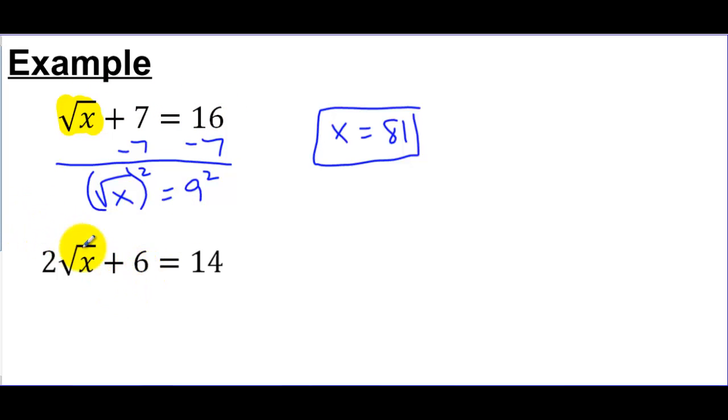So the second problem, we have the same idea. So if I were to highlight my function, I'd say the square root of x. There it is again. And in this case, I just have an extra. This is 2 times the square root of x plus 6. So I'm going to say let's subtract the 6, undo addition and subtraction. And that looks like 2√x is equal to 14 minus 6, which would give me 8.